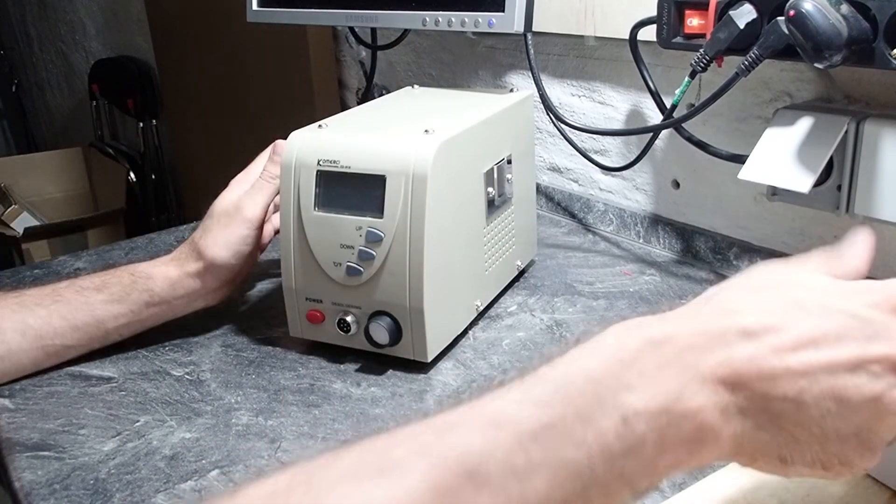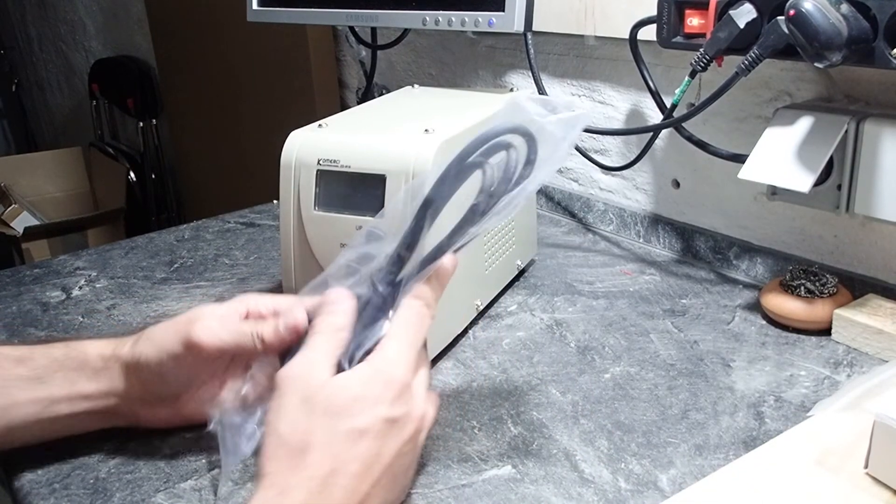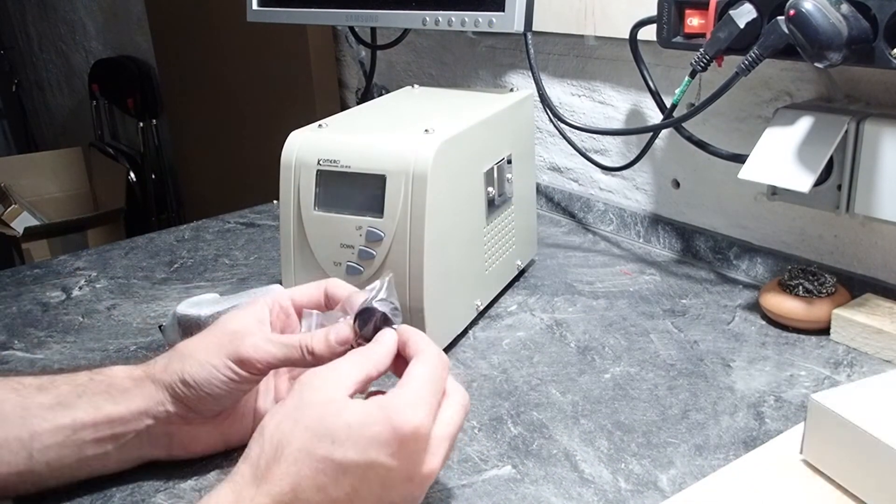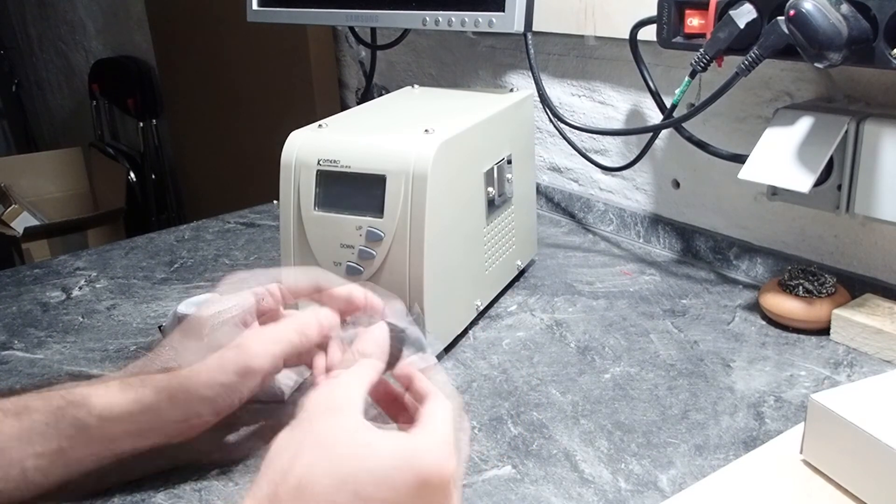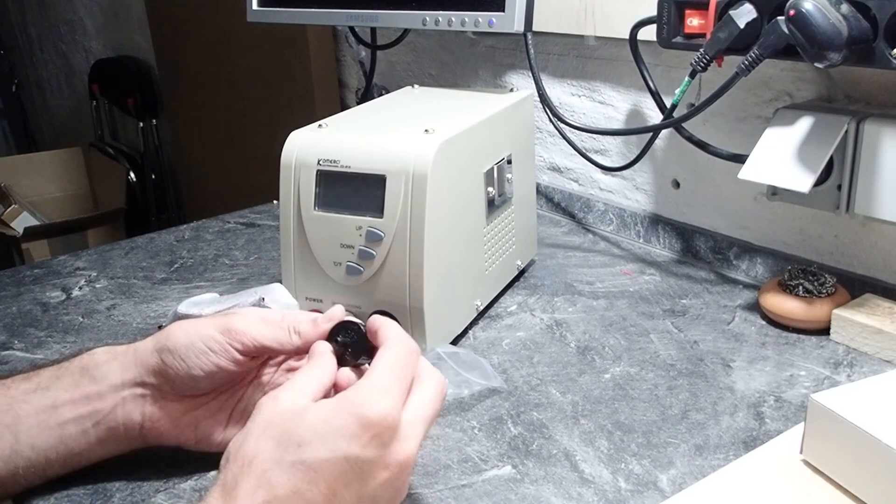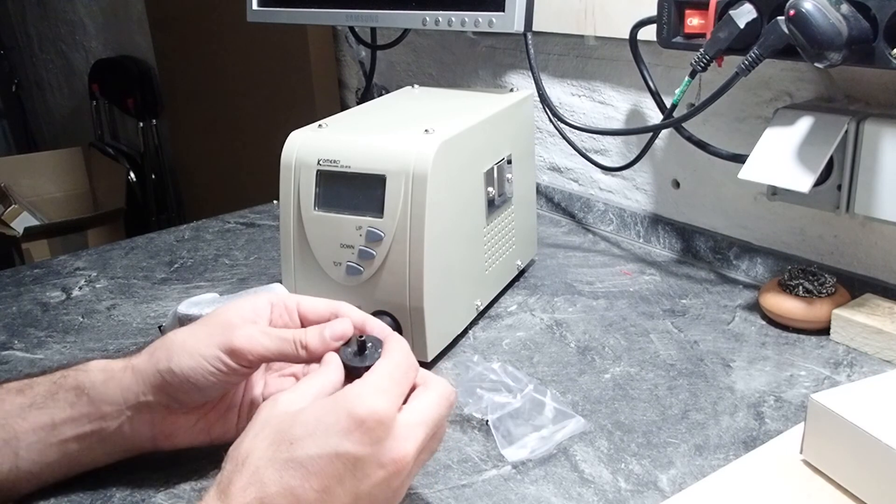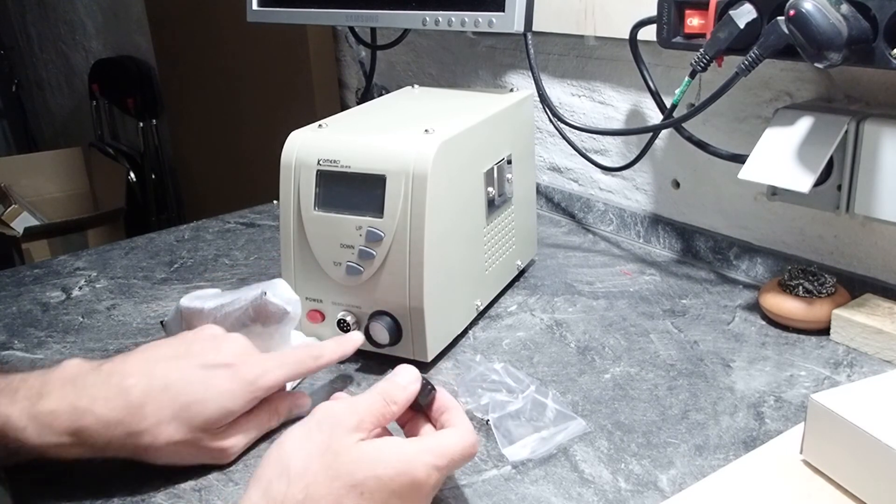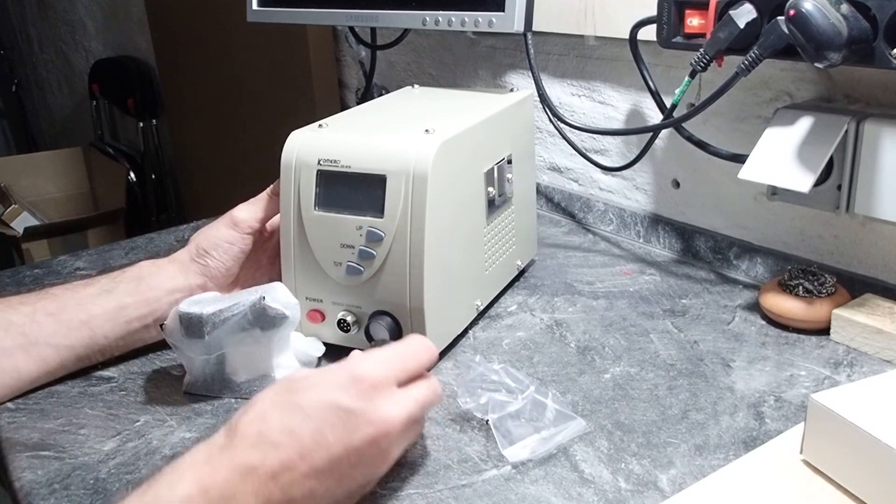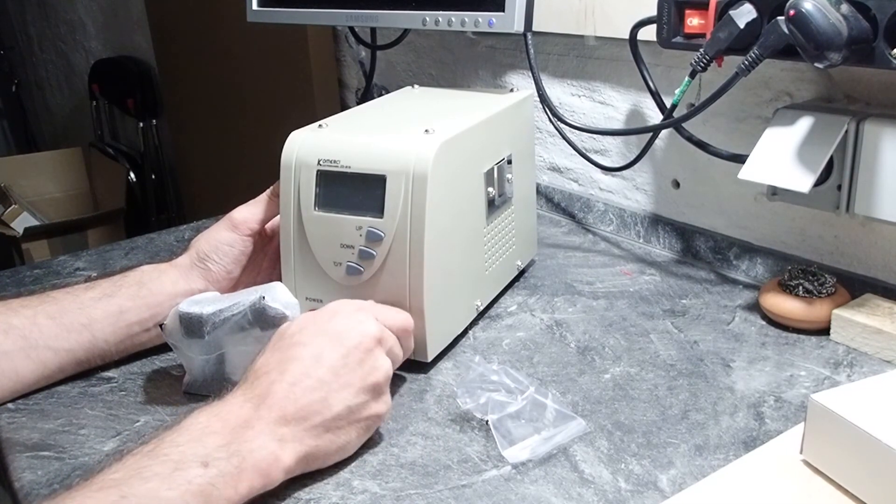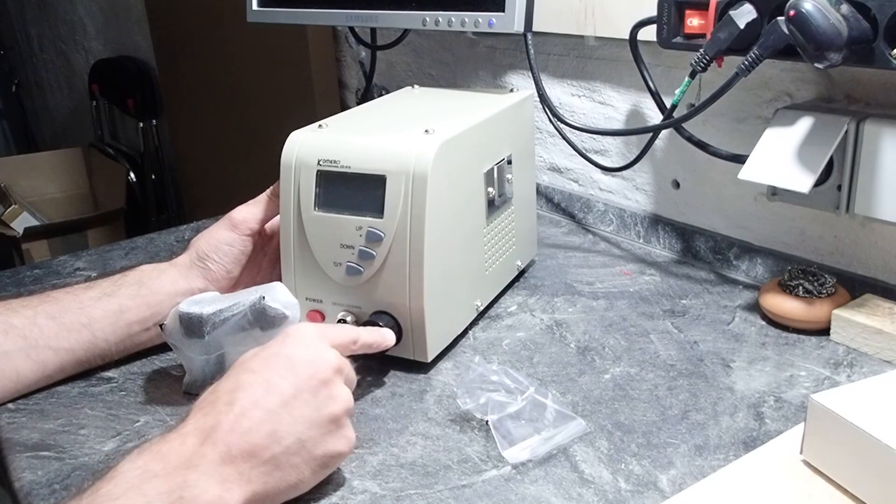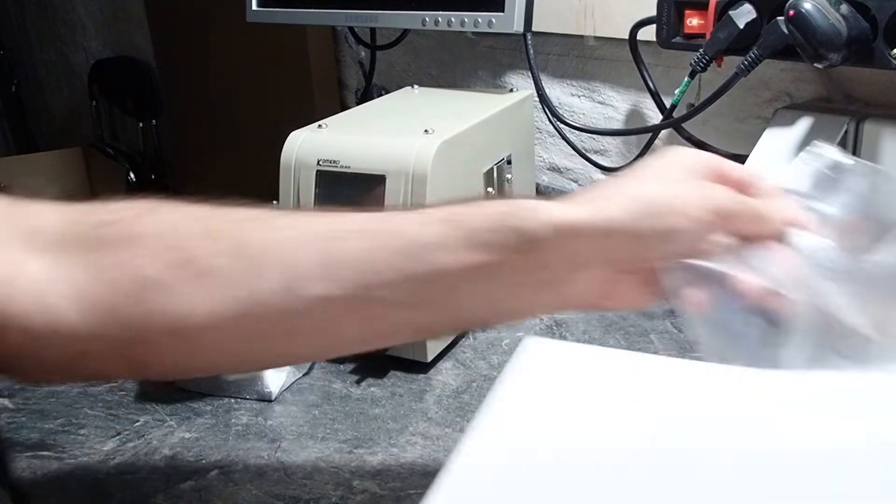It comes with a standard power cable that you use for any PC, and you have a nozzle for the pump which is integrated into the main housing there. There is a filter inside and this nozzle is used to put the rubber tube which goes to the desoldering gun.